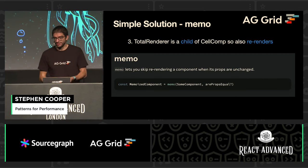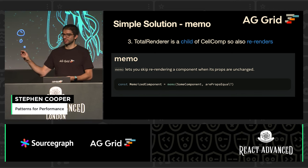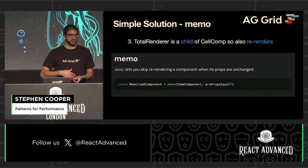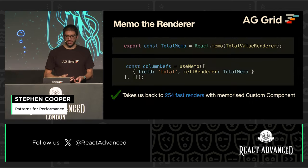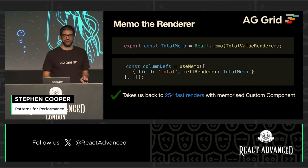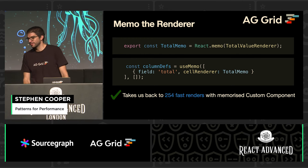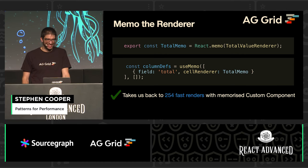Simple solution: Memo. Memo lets us skip re-rendering the child component. So we update our code — instead of passing the value renderer directly in, we wrap it in Memo and pass it to the cell renderer, and that takes us back to the fast rendering. Now, if I stop there, that would be a very short talk. But can we do better than Memo?